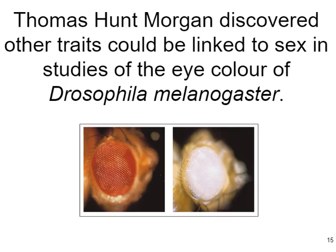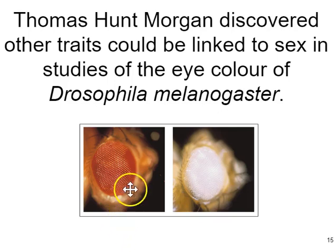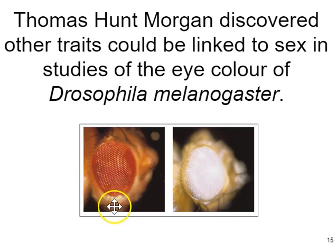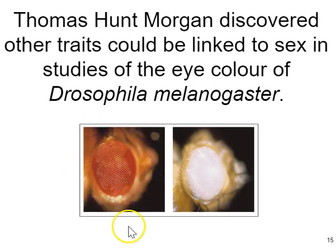Thomas Hunt Morgan discovered that traits could be linked to sex. Specifically, he noticed that some fruit flies in his cultures had white eyes. Most wild-type Drosophila melanogaster have brick-red eye colors — you might not have noticed because you haven't looked closely at a fruit fly, but if you catch one in your kitchen, their eyes will generally look like that. In Morgan's lab, he noticed from time to time he would see white-eyed fruit flies, and he noticed they were usually male.